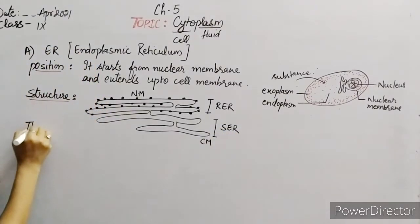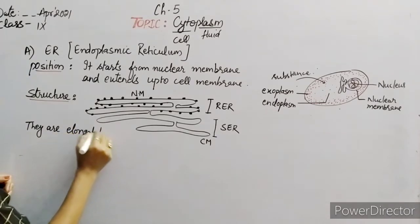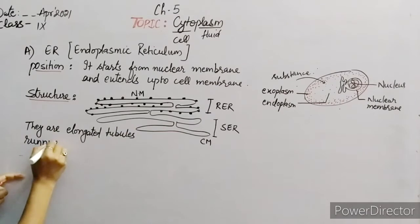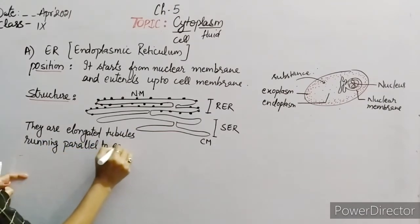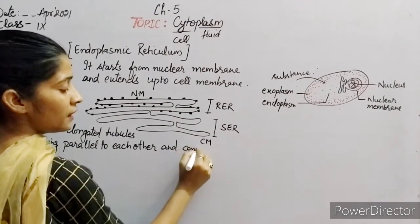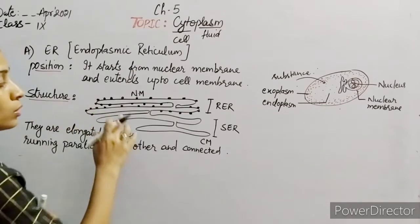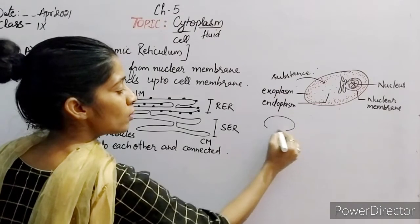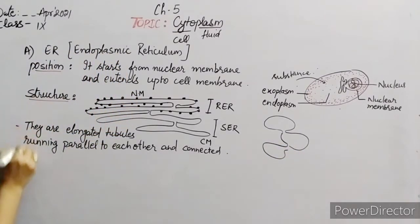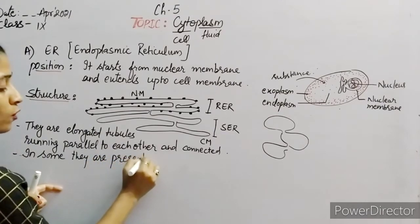Structure-wise, they are elongated tube-like structures running parallel to each other and connected to each other. Sometimes they are in the form of vesicle tubes.